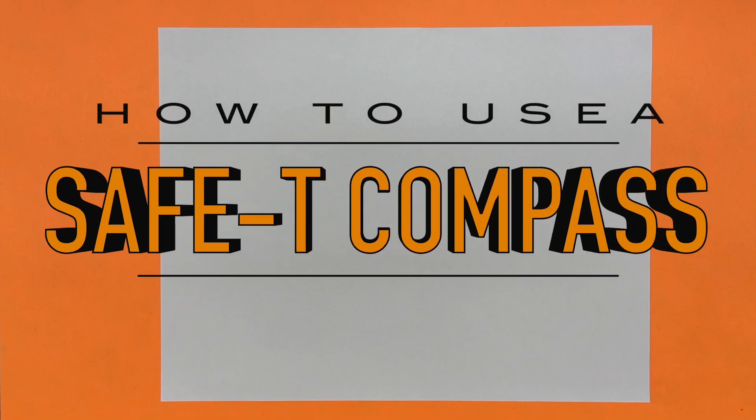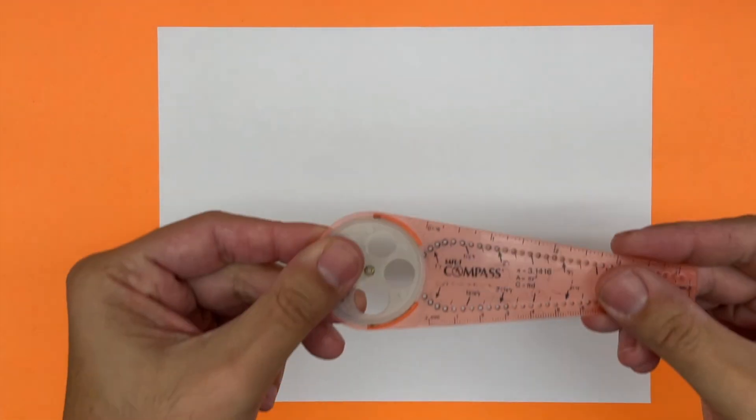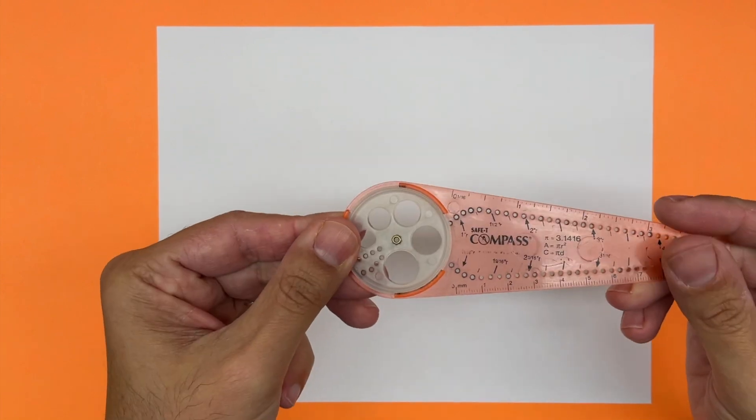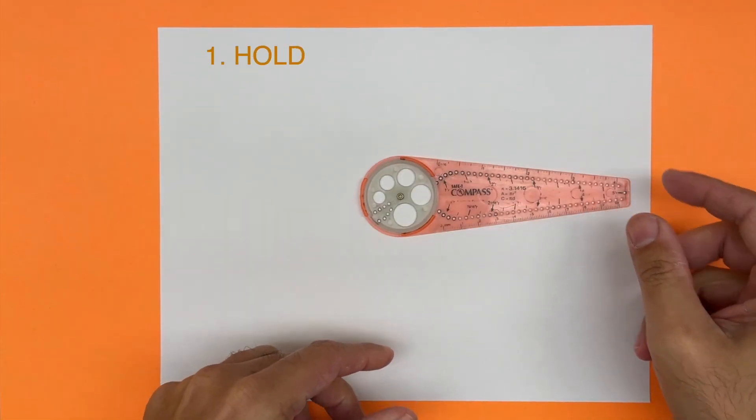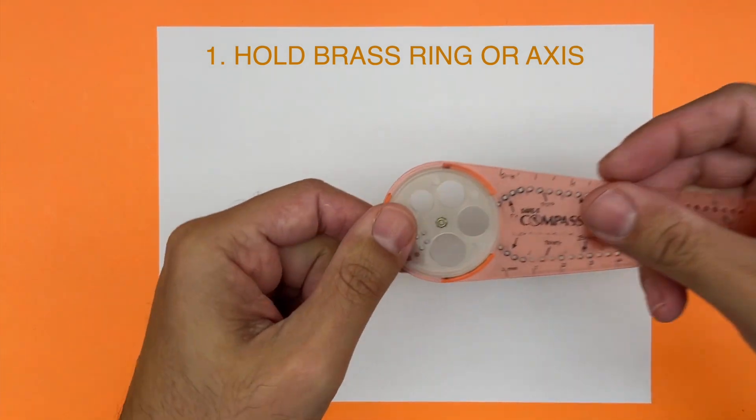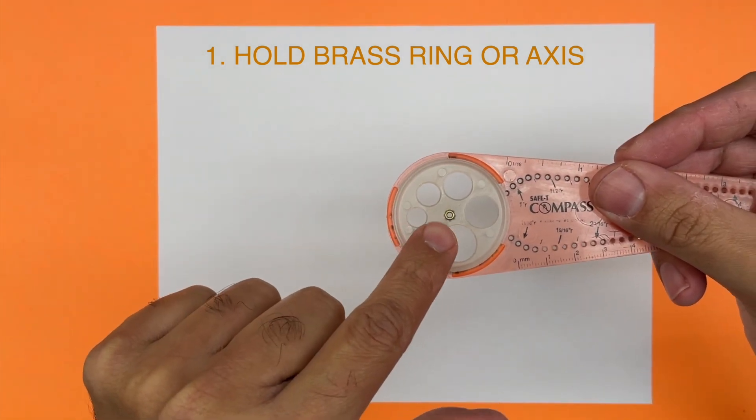All right, this video is how to use a safety compass. First, let me go over the common reasons why this might not work for you. One: maybe you're not holding it in the middle, which is this brass ring that you see there.